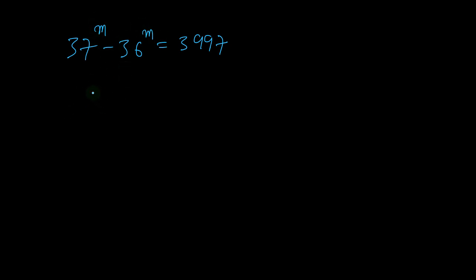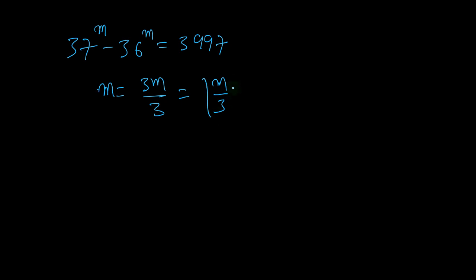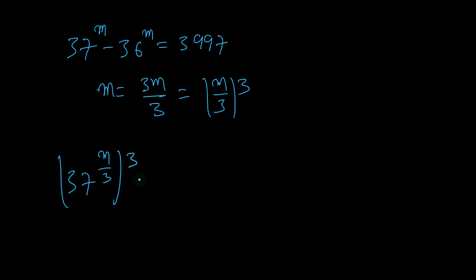What I'm going to do is — we have m here as a power, so I can write m as 3m divided by 3, which I can write as m over 3 times 3. This is what I'm going to replace this power with. So I'm going to have 37 to the power of (m/3) cubed, minus 36 to the (m/3) to the power of 3.